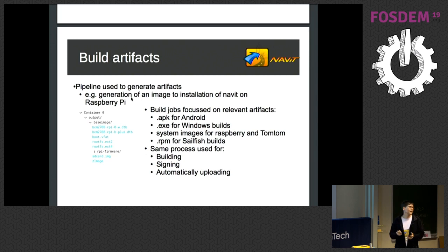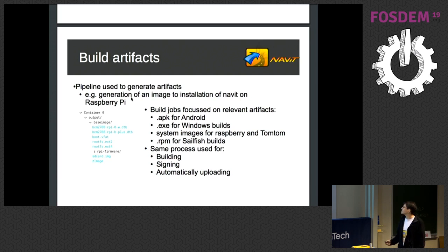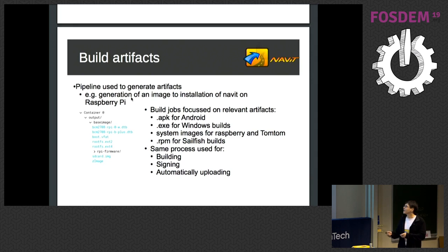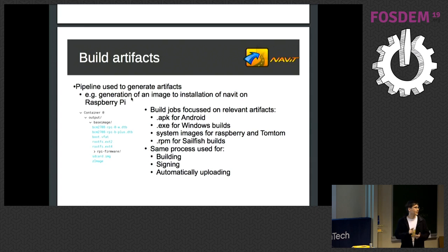Depending on the platform, you get different kinds of artifacts. The artifact shown here is an image you can install on a Raspberry Pi and run NAVIT directly. For a Linux-based system like Sailfish OS, you'd have an RPM package file; on Windows, an executable. We can use the same process not only for building but also for signing and automatic uploading — uploading to the beta channel of the Play Store is done automatically.